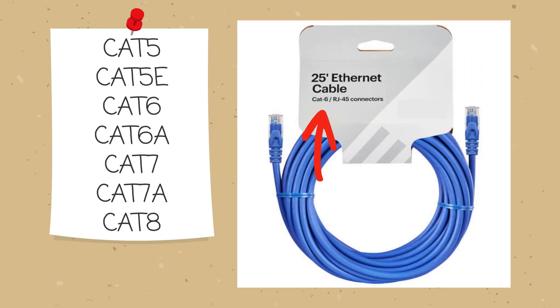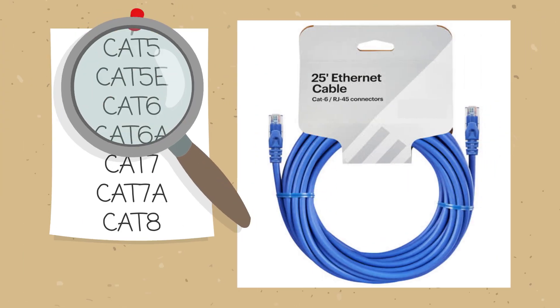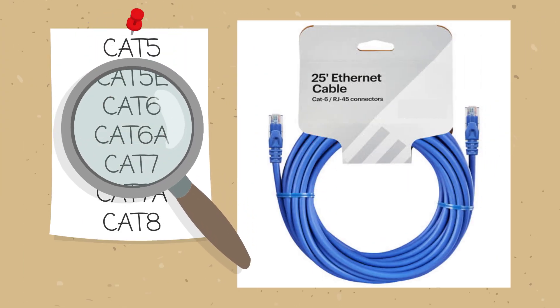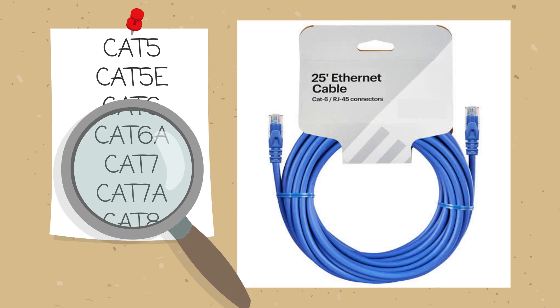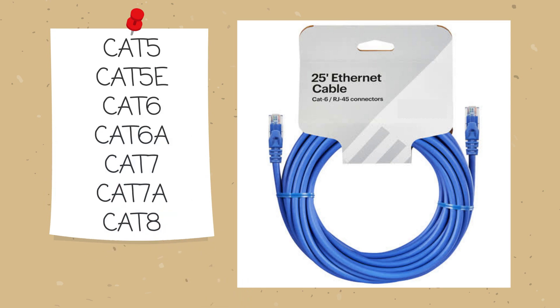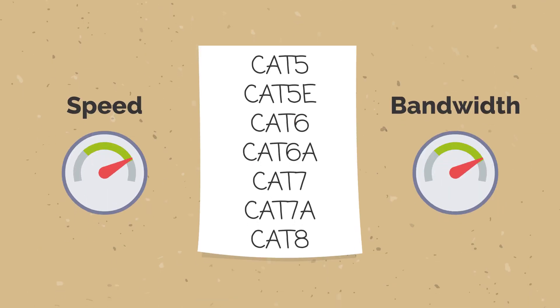The numbers associated with the CAT types help us differentiate between the types of cables. Different CAT cables are used for different speed or network standards. Data transmission speeds and max bandwidth capacity are improved the higher the category of cable.